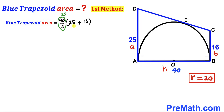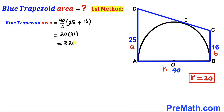Adding 25 and 16 gives 41. So the area is 20 times 41, which equals 820 square units — the area of blue trapezoid ABCD.